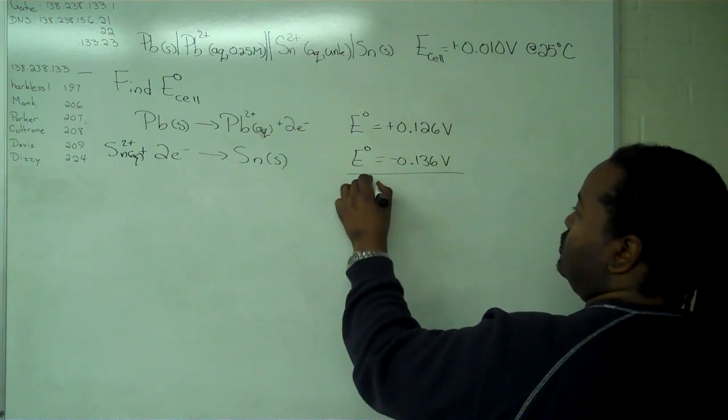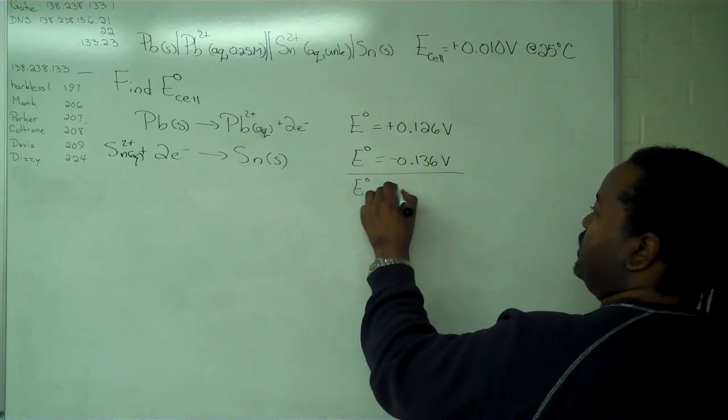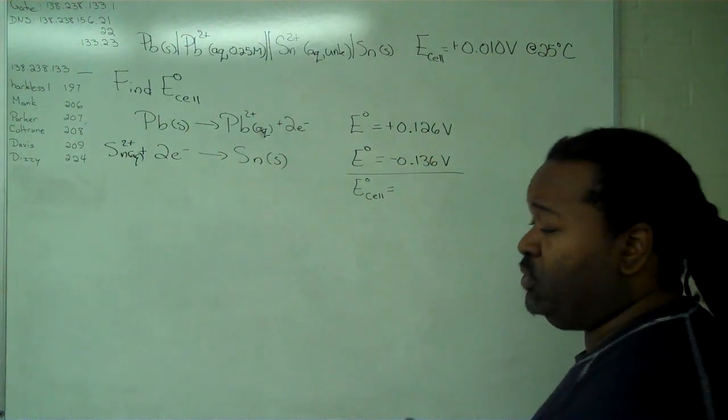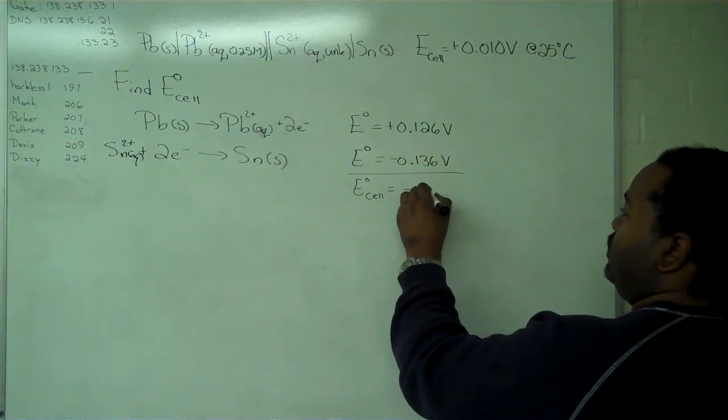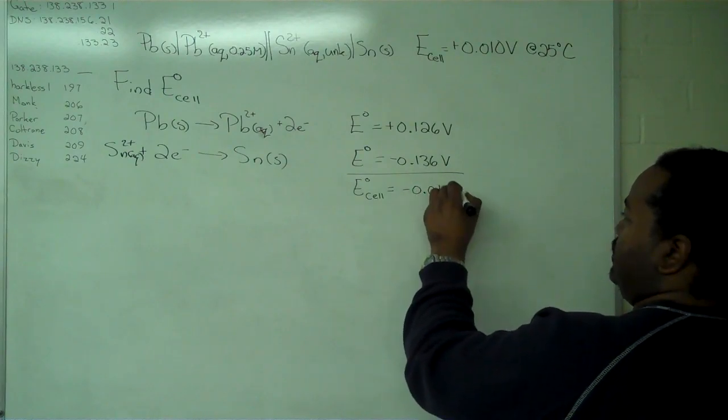We can add these two directly to get E cell standard, giving us a value of negative 0.010 volts.